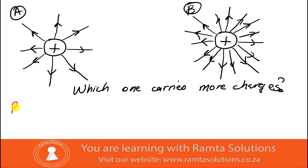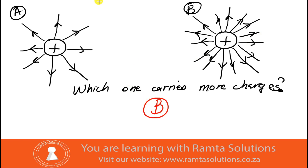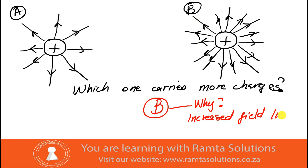The answer is B. Figure B carries more charges. This is because it has an increased number of field lines, and the field lines are more closely spaced together. This is why we say figure B carries more charges.